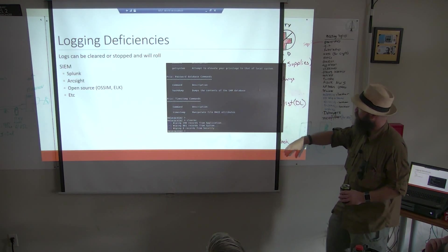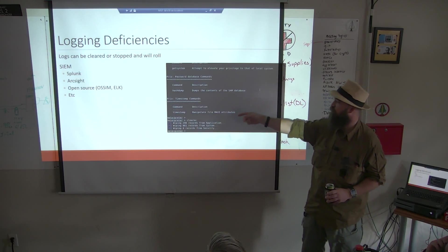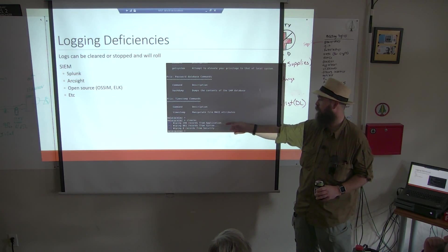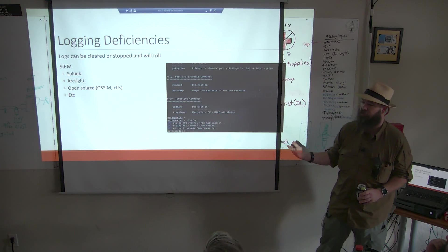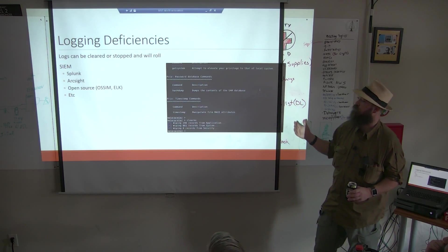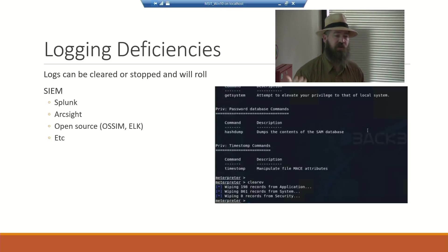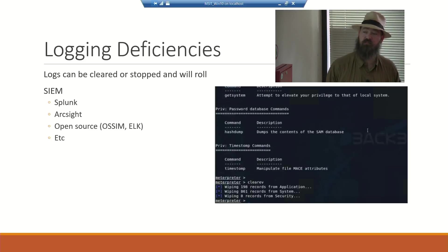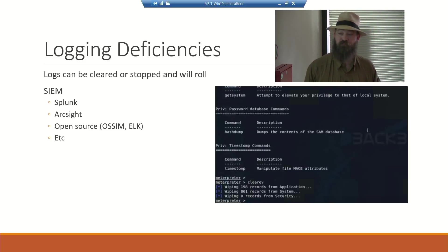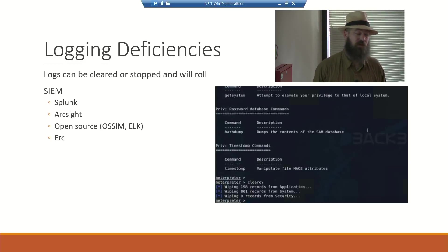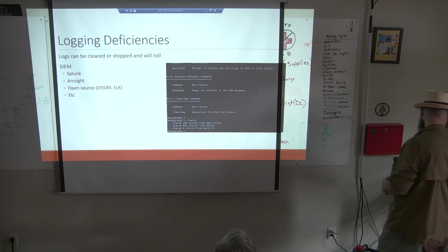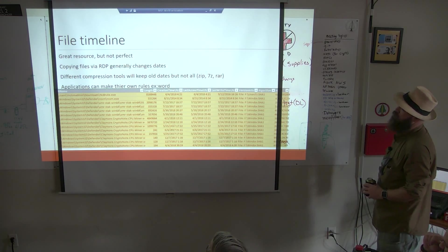Logging deficiencies: logs can be cleared or rolled. I can timestomp something, wipe records from application, system, or security logs — your logs are gone on the local box. This really sucks for an investigator, especially if you didn't have a SIEM. So how do you pick which alerts to back up? Jump back to that NSA/FBI list — it's pretty good. Some rules work awesome out of the box but they all require tweaking. Products like Splunk and ArcSight are awesome but rules out of the box might not fit your environment. Nothing's perfect.